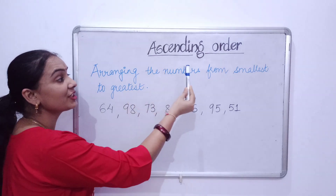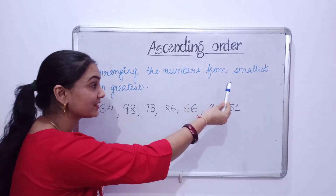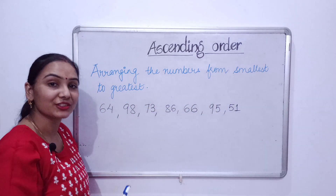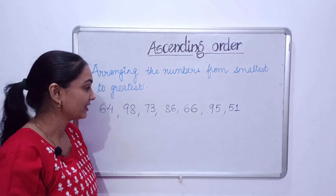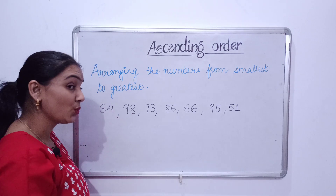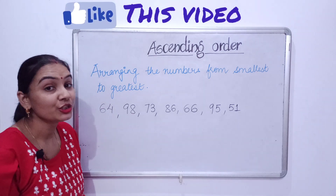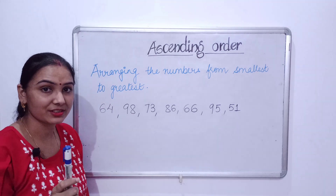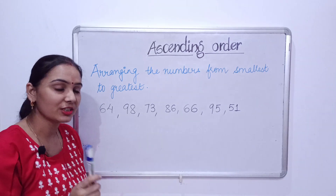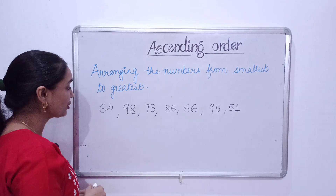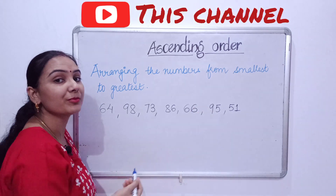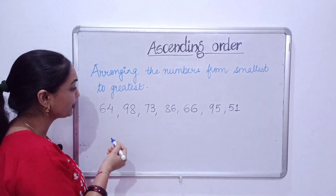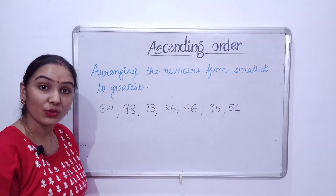Arranging the numbers from smallest to greatest is known as ascending. So ascending means to choose the smallest among all the numbers. So here we have some numbers from which we choose the smallest one.